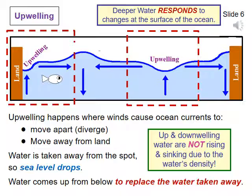Upwelling occurs where winds cause ocean currents to move apart — diverge — or pull water away from the land. This creates a hole or gap in the surface of the ocean. Eventually, the gap becomes so deep that water from below starts rising up to replace the water pushed away by the winds. Winds only create currents at the surface; the currents do not reach very deep. Eventually a depth is reached that remains unaffected by the winds. It is this deeper water that moves up to fill in the hole at the surface. Notice that the sea surface goes up where there is downwelling and goes down where there is upwelling. Deeper water is reacting to changes at the surface.